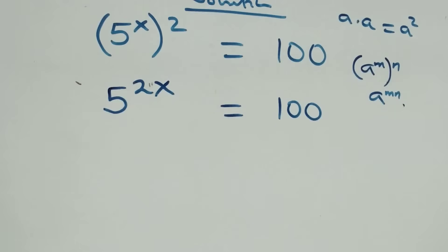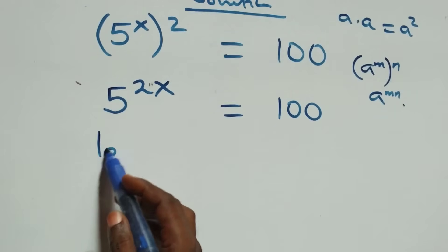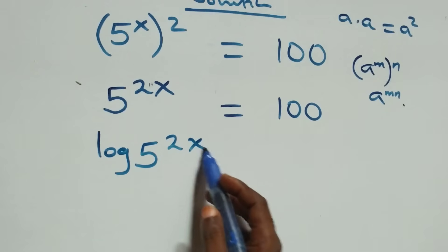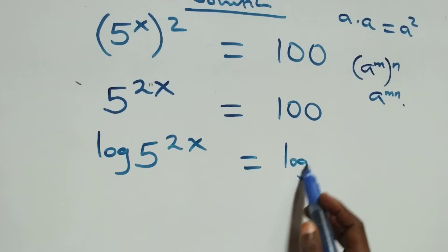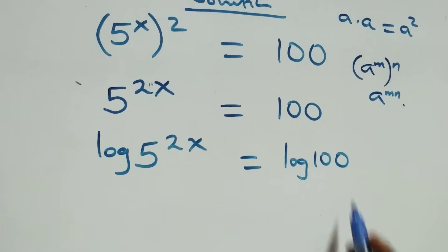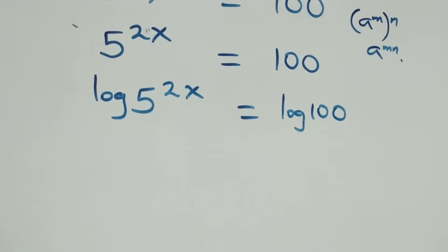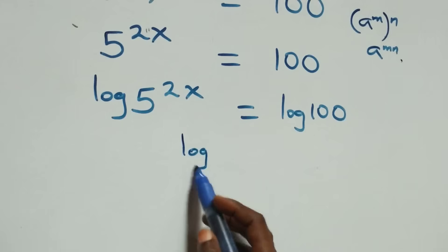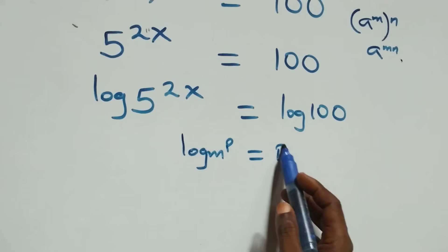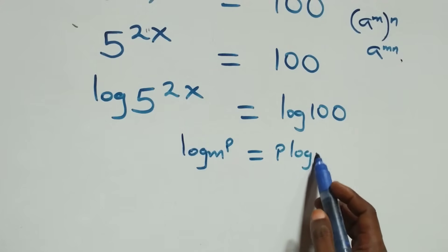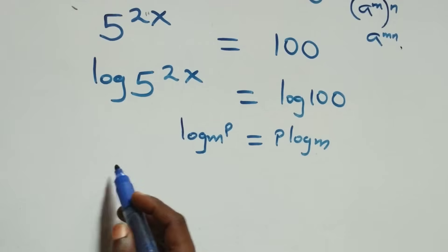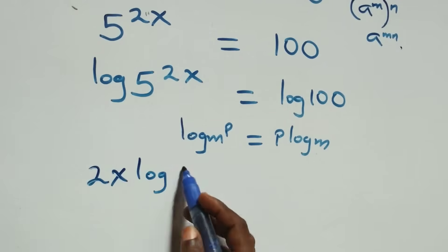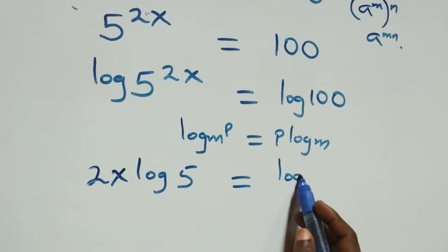The next step: take the log on both sides. We have log of 5 raised to power 2x equals log of 100. Then we apply the power rule of logs: when we have log m raised to power p, this is the same thing as p log m. So this becomes 2x log 5 equals log 100.